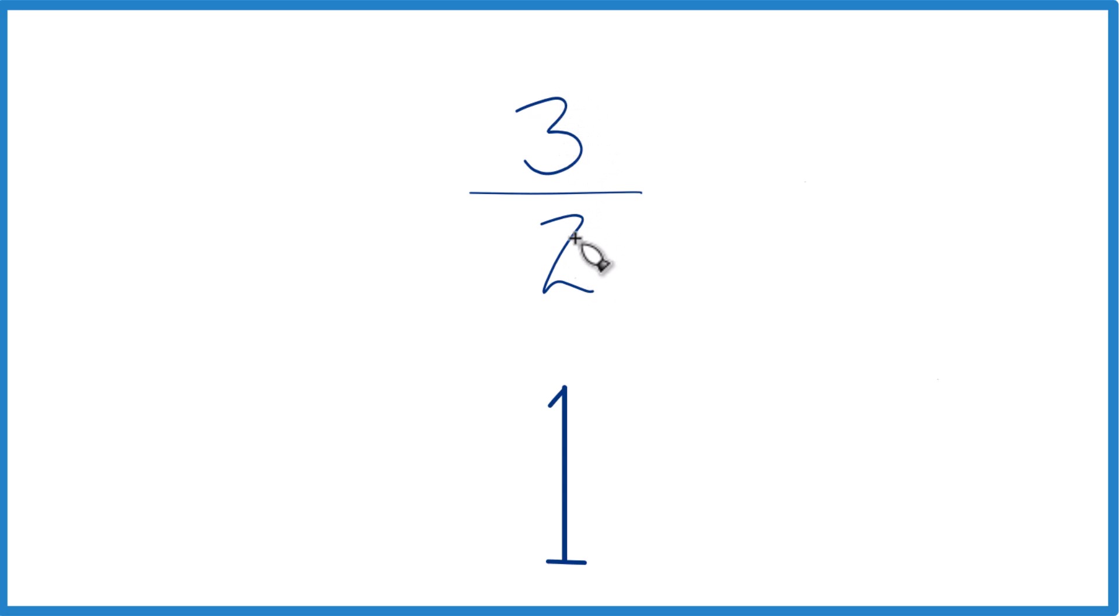So because 3 is larger than 2, that means when we divide 3 by 2, we're going to have a number that's larger than 1. So we know that 3 halves is larger than 1.